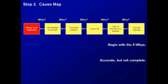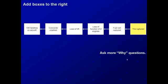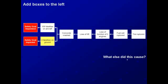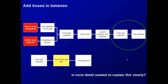This very simple analysis is accurate but not complete. We can add more detail to the cause map in several ways. We can continue to add boxes to the right by asking why questions — for example, the fuel cell was ruptured because a tire was ruptured. We can add boxes to the left to show additional impacts; so the Concorde crashing not only resulted in 109 fatalities on the aircraft, but also 4 fatalities on the ground. We can also add boxes in between to add additional detail — for example, to show how the tire rupturing caused the fuel cell rupture, we can add that the tire ruptured, then the tire struck the fuel cell, causing the fuel cell to rupture. You can determine if you need to add more detail by asking: is more detail needed to explain this clearly?